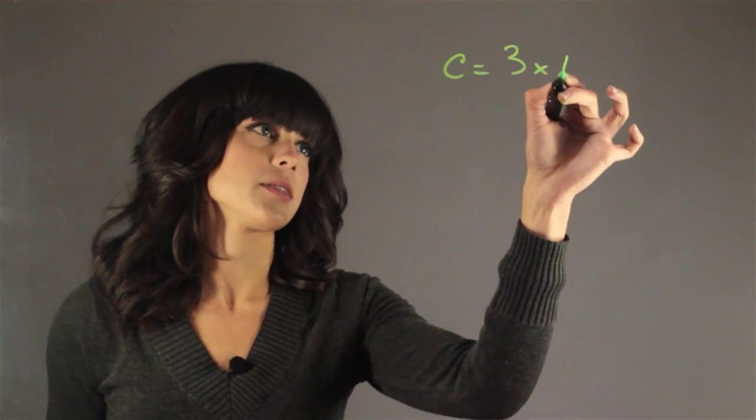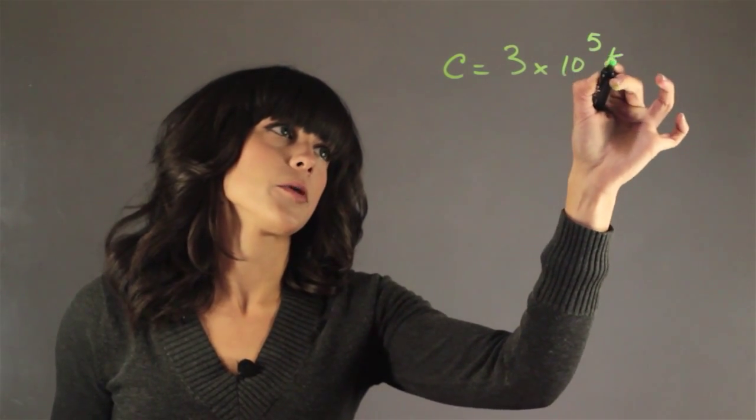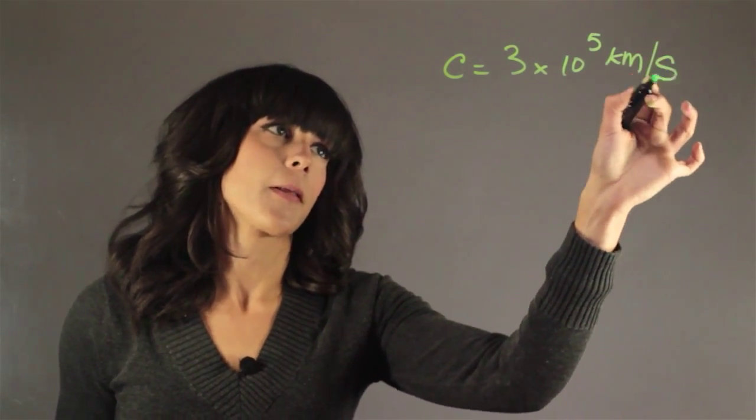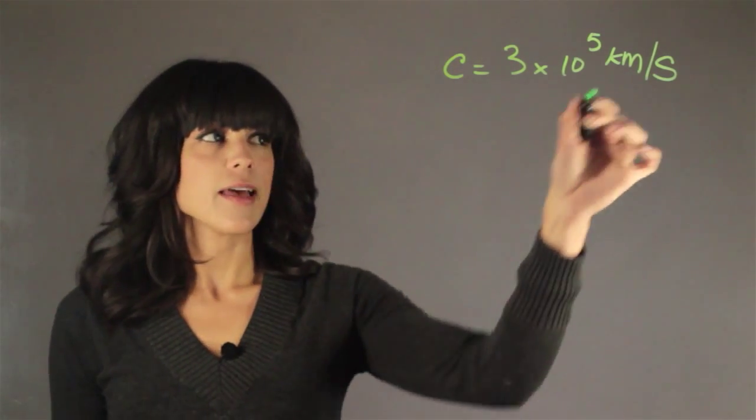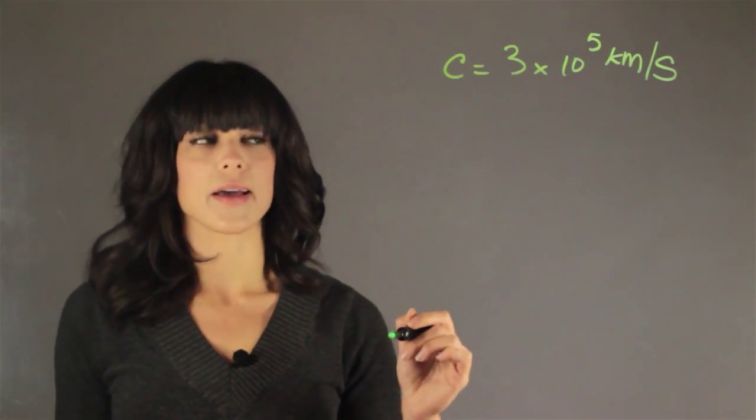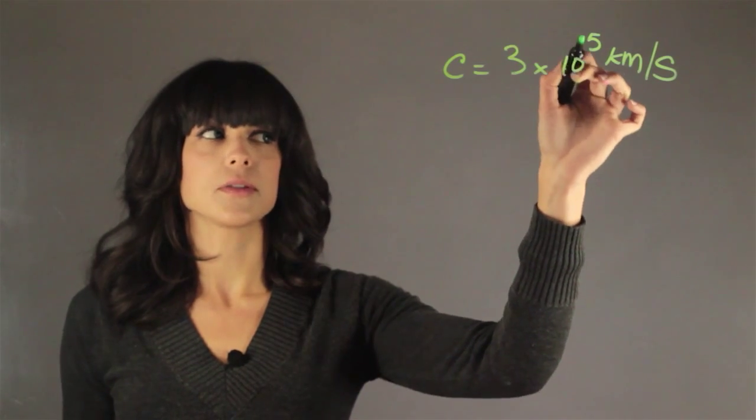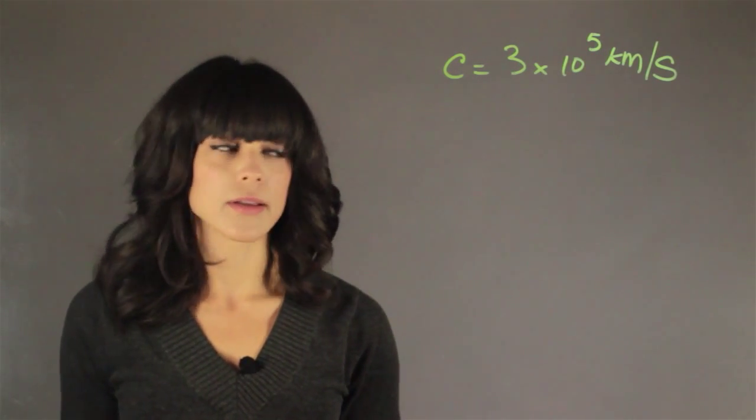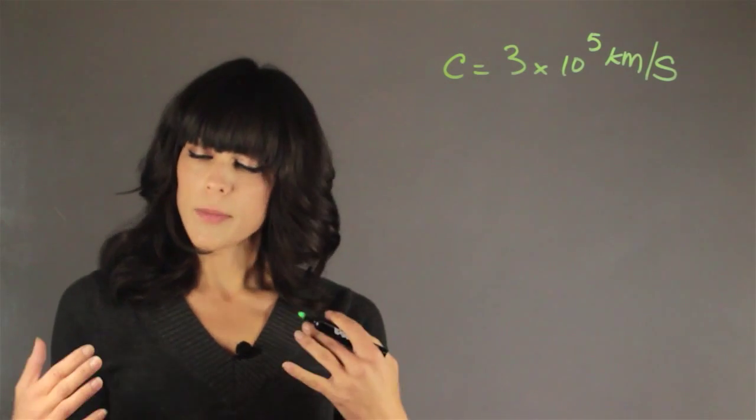This is generally 3 times 10 to the 5 kilometers per second. So that means that every second that goes by, light travels 3 times 10 to the 5 kilometers. That's a lot. So how many kilometers does it travel in one year?